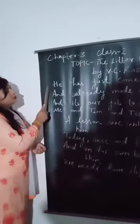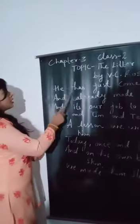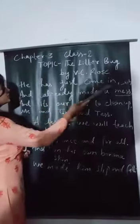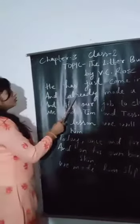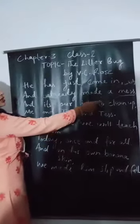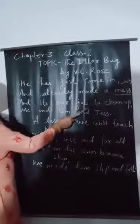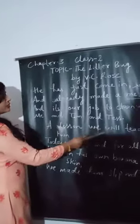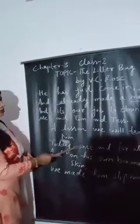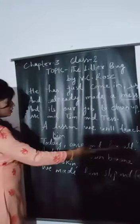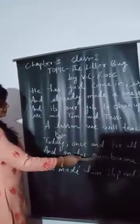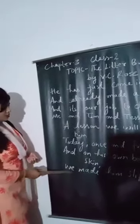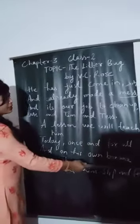Here is the third paragraph of this poem. He has just come in and already made a mess. Mess means untidy or unclean. And it is our job to clean up. A lesson we will teach him today, once and for all, and on his own banana skin we made him slip and fall.